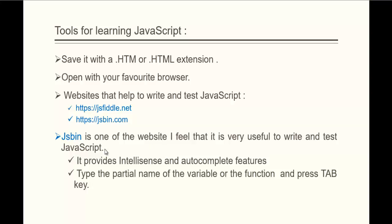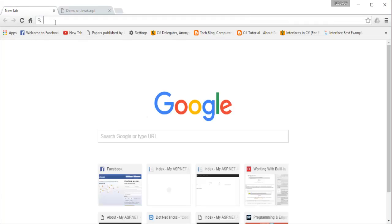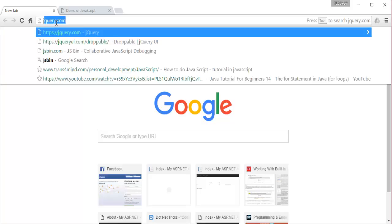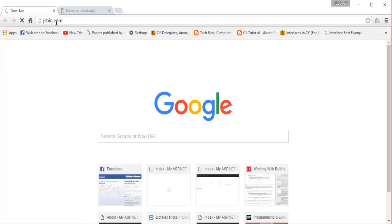JSBin has two advantages. One is it provides IntelliSense and Autocomplete features. Also, if you type the partial name of a function and then press the Tab key, it will provide you the complete function name. Now let me show you a demo — let me open my browser and visit jsbin.com.